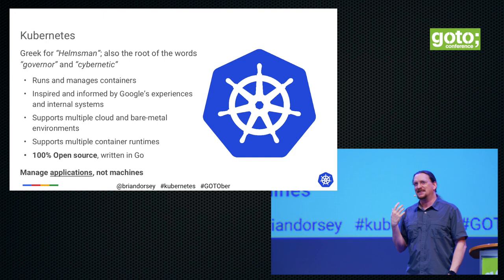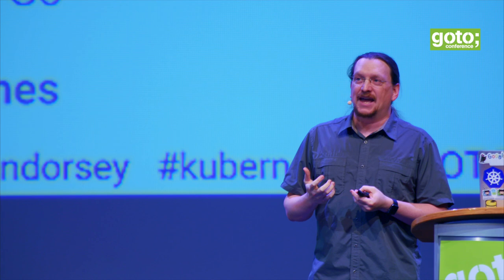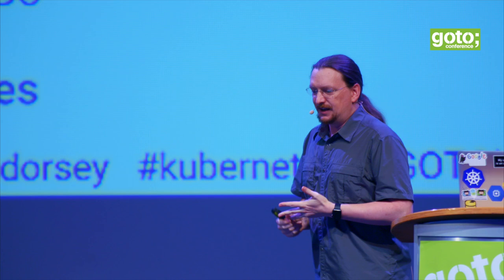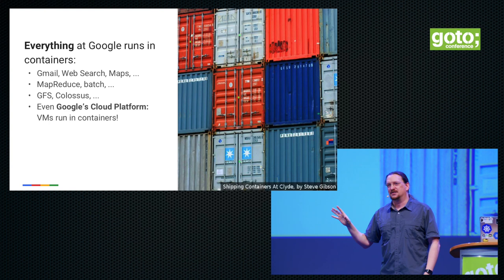Kubernetes is Greek for helmsman — I think the original Greek is something more like 'Kubernetes', but it came out of the west coast of the United States, so it's Kubernetes. It runs and manages containers. It's inspired by Google running lots of containers in production, and now that it's been an open source project for a year and a half, it's grown to meet the needs of a much wider group. You can run it in multiple cloud environments or on your own computers. It supports Docker, Rocket, and the AppC stuff. It's 100% open source — up on GitHub, issues are there, you can go watch people argue over the code. The focus is managing applications, not just machines.